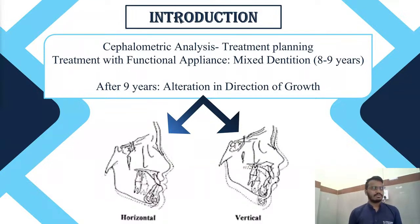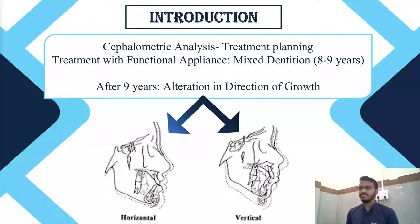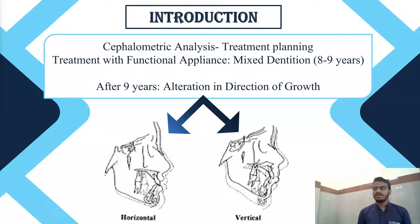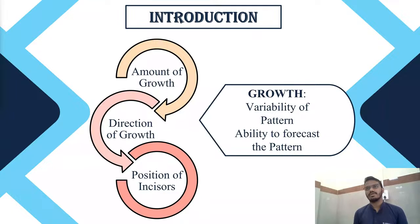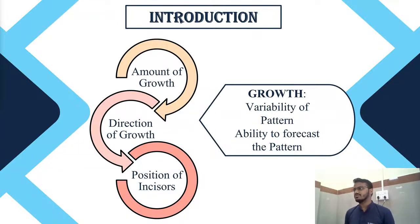Maximum amount of growth occurs during the prepubertal period. Specifically, after nine years, there is an alteration in the direction of growth — it can be average, horizontal, or vertical, but in most cases it is horizontal, followed by average and then vertical. Regarding the amount of growth, it can be low, medium, or high. A high amount of growth is usually beneficial in functional appliance therapy.